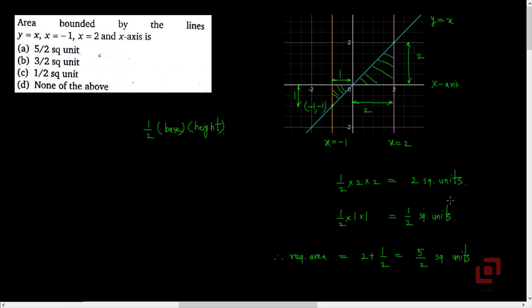Therefore, the required area will be the addition of 2 and 1/2 which is 5/2 square units. And that is option A.